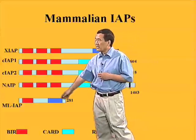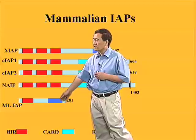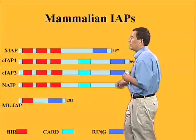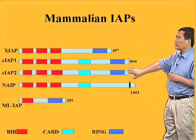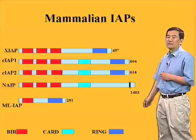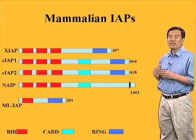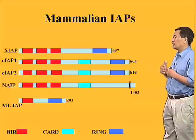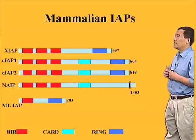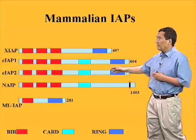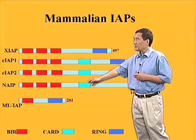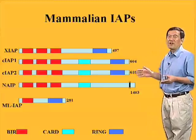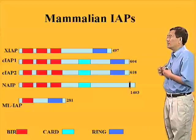There are also IAPs such as MLIAP, which is highly expressed in melanoma cells, that have only a single BIR domain. In several IAP molecules, at the C-terminus, they also have a ring-finger domain. The ring-finger domain is one of the described ubiquitin E3 ligase domains that can ubiquitinate substrates and cause their turnover. Several IAPs also have a CARD domain in the middle of the protein, though the exact functions of this CARD domain are still not well understood.